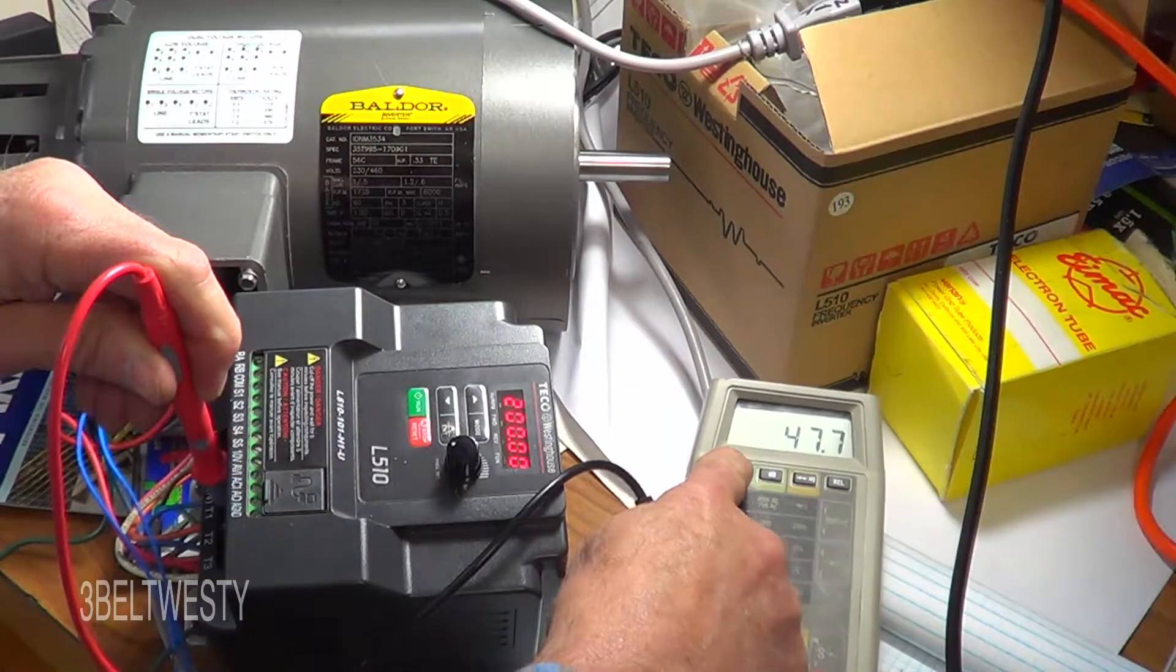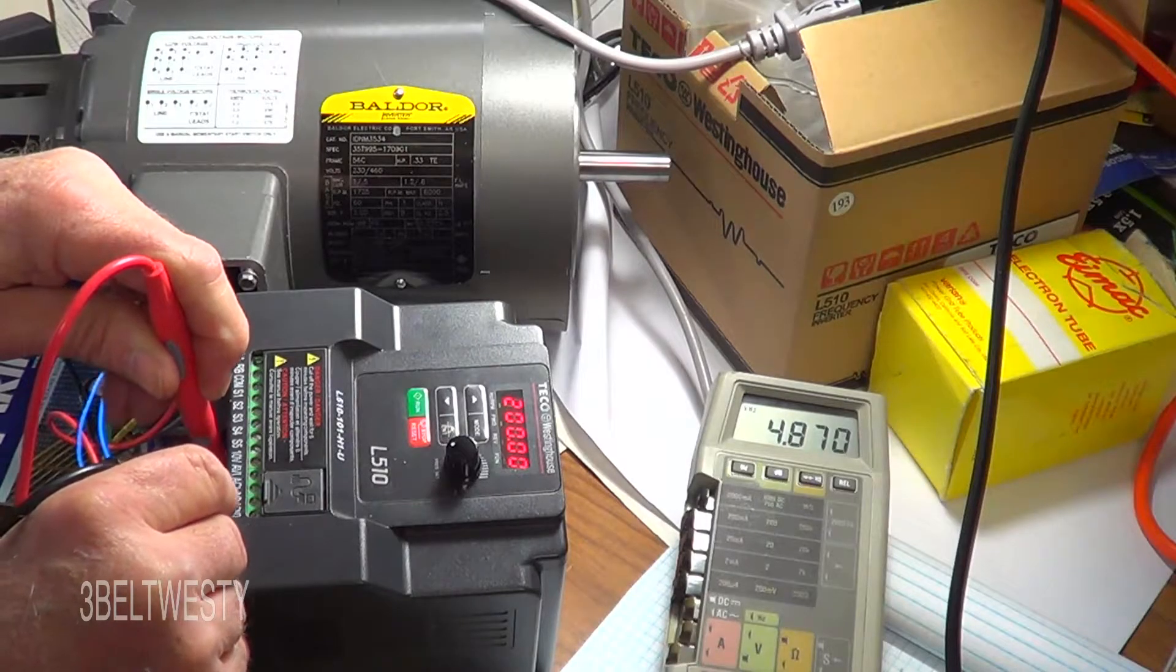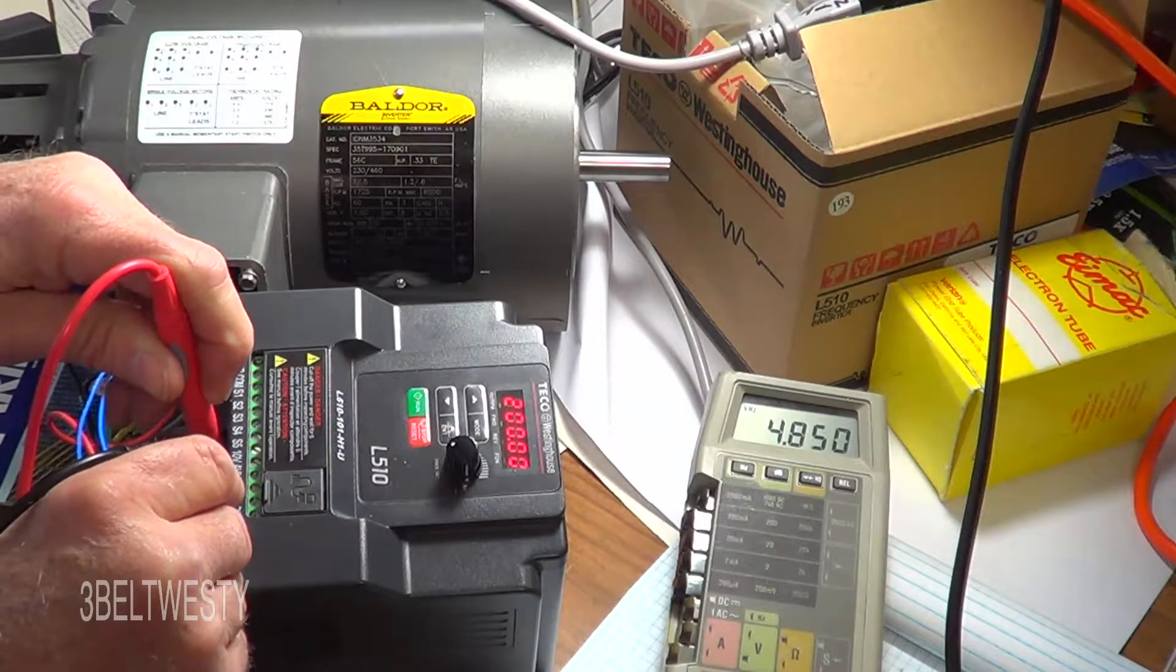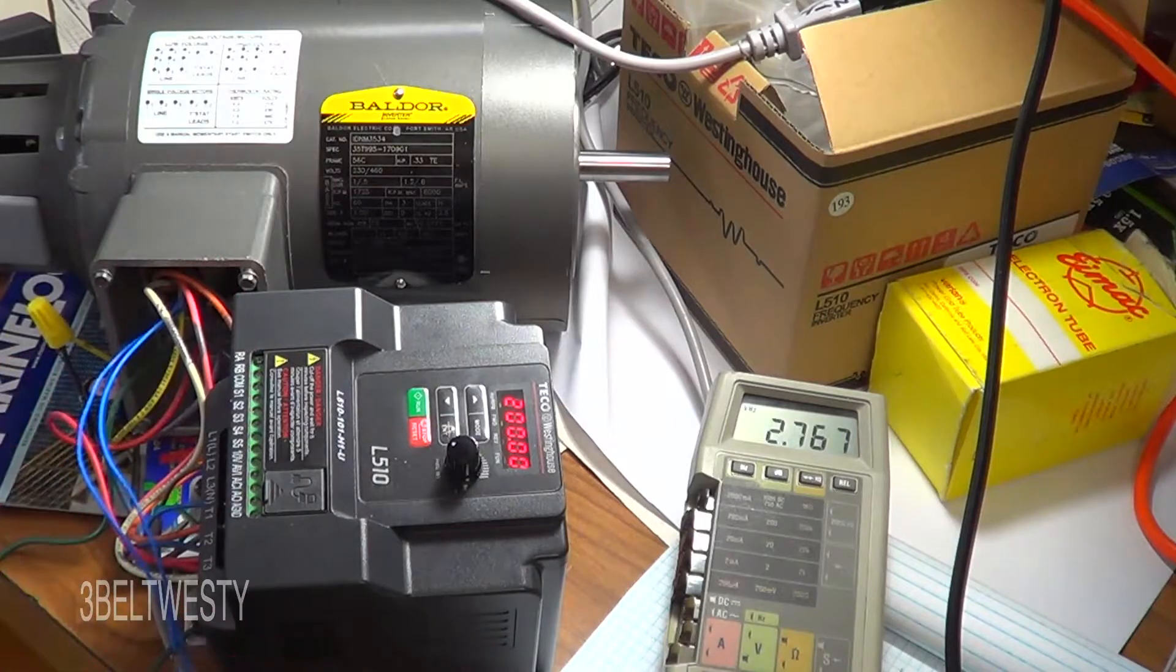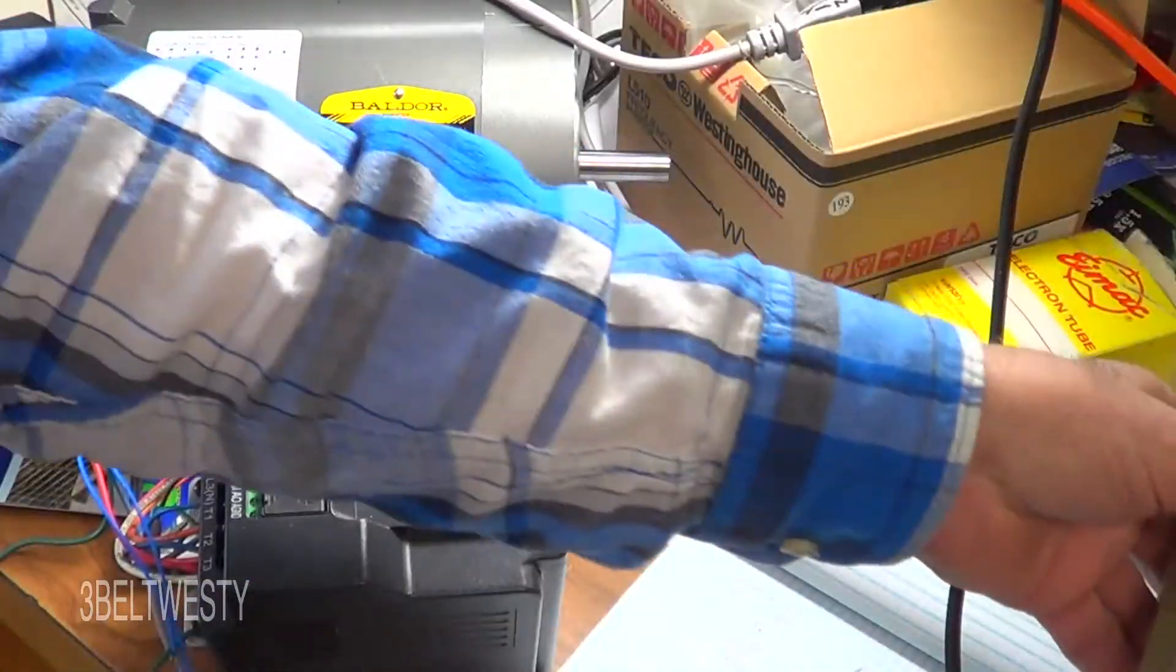There's 266 volts. If I try to measure the frequency it's going to measure the hash on the top, so there it is - 4.8 kilohertz. It's not actually measuring the hertz like this.